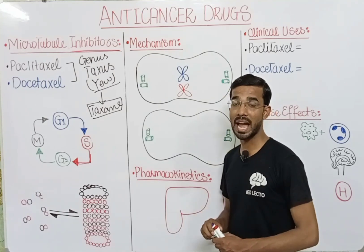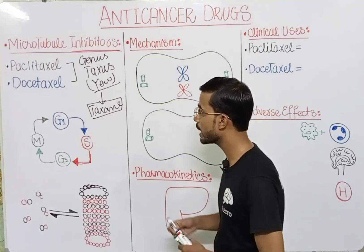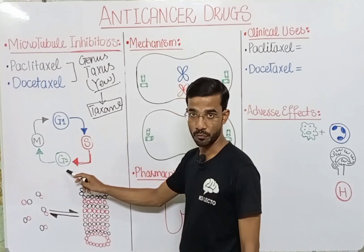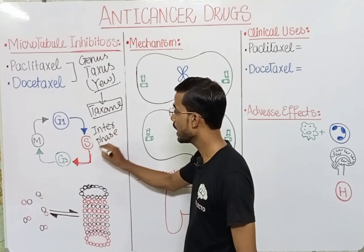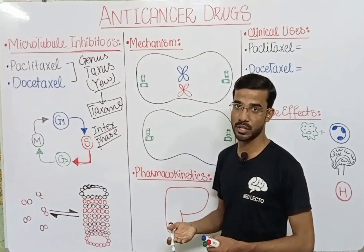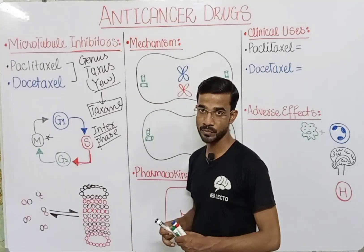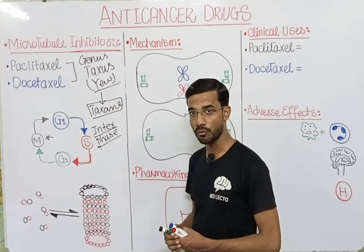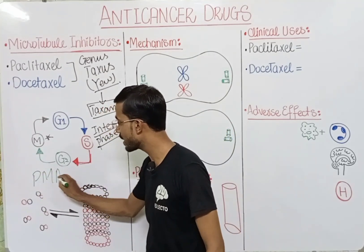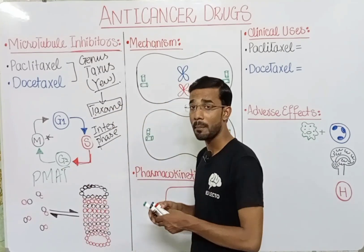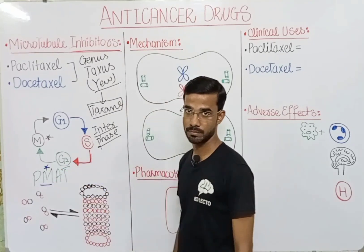These drugs are cell cycle specific — they act on a specific phase of the cell cycle. The cell cycle includes G1, S, and G2 phases in the interphase, where the cell prepares materials for division. In the M phase (mitotic phase), actual cell division occurs, subdivided into prophase, metaphase, anaphase, and telophase. The most important phases for the taxane family are metaphase and anaphase.